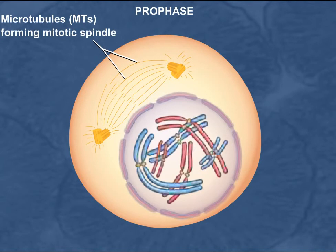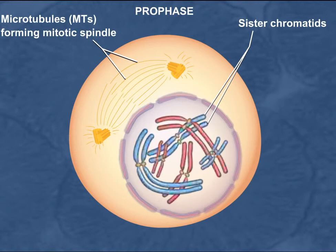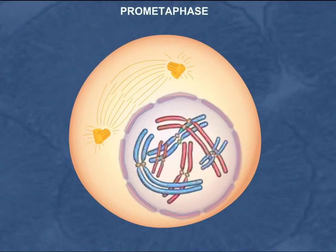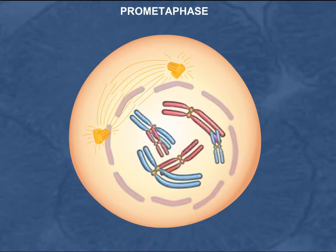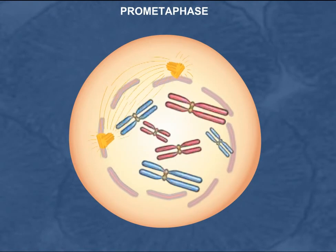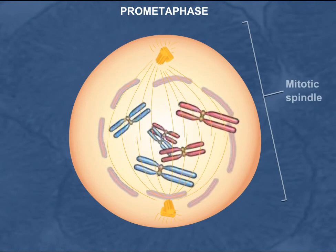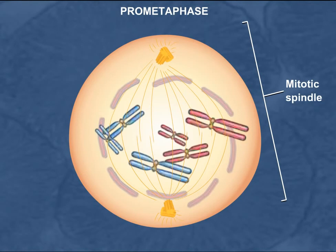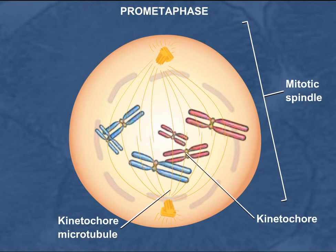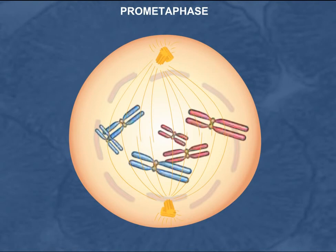Chromosomes completely condense such that sister chromatids, formed from the replicated genetic information and joined at their centromeres, are clearly visible. During prometaphase, the nuclear envelope completely breaks down and the mitotic spindle is formed. Polar microtubules extend from both poles and overlap with each other. The sister chromatids become attached to the mitotic spindle by kinetochore microtubules that attach to the kinetochores, which are bound to the centromeres. As prometaphase nears its end, the sister chromatids are observed to jerk back and forth between the two poles.